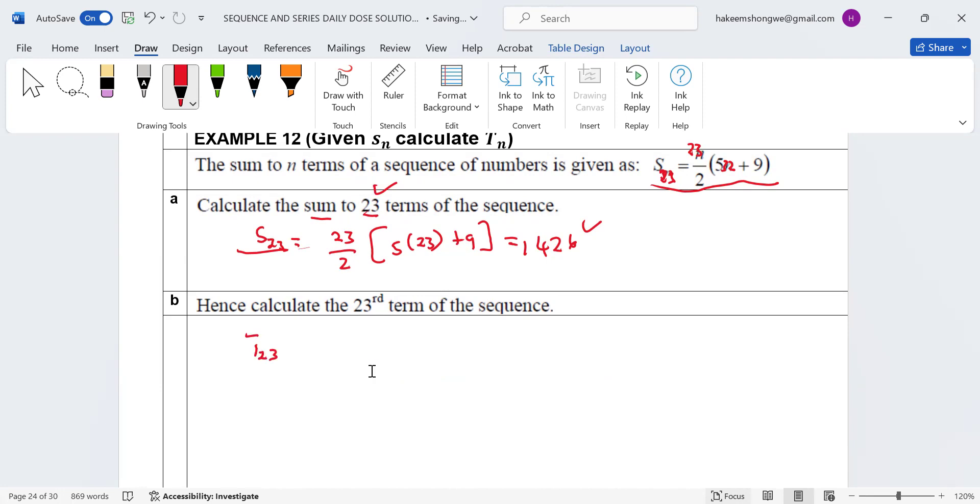Now if a learner wants to get term number 23, what should they do? A learner should say term number 23 is going to be given by S23. But let's come up with the general formula first. If a learner wants to go from Sn to Tn, it says Tn is going to be given by Sn minus Sn minus 1.